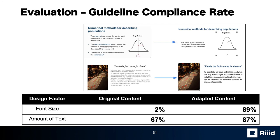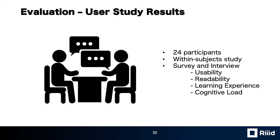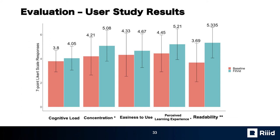Now let me share the evaluation results. We first evaluated the design compliance rate after content adaptation. The compliance rate for design guidelines improved from 2% to 89% for font sizes and 67% to 87% for word count. We also conducted a user study with 24 participants, who were required to watch two video lectures using two different video players — the baseline and the Fitbit interface. After watching, they were asked about their perceptions and reasons behind real-time manipulations, and completed a questionnaire on usability, readability, learning experience, and cognitive load. We found that Fitbit significantly improves learning experience with increased concentration, perceived learning experience, and readability.